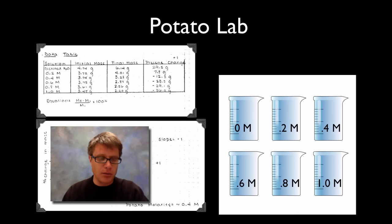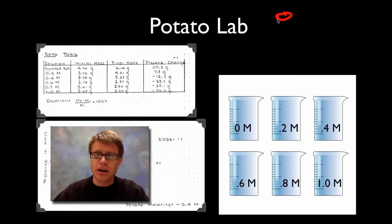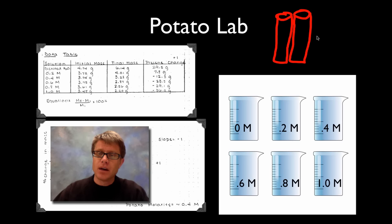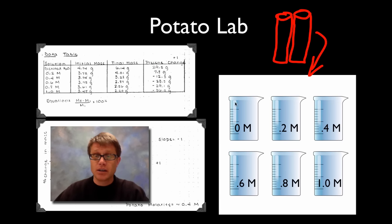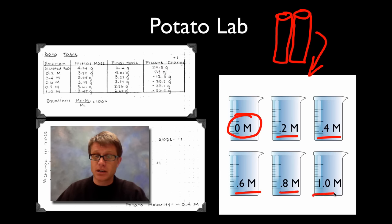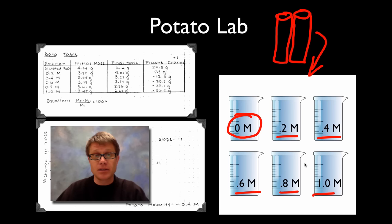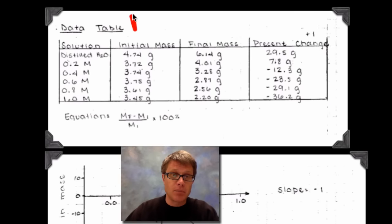Now for the actual potato lab. We core potatoes — cutting out small cylindrical pieces — and place about three cores into beakers containing different sugar concentrations: distilled water (0 molar), 0.2, 0.4, 0.6, 0.8, and 1.0 molar. We record the mass on day 1 and again on day 2. For example, in distilled water the day 1 mass is 4.74 grams and the day 2 mass is 6.14 grams.